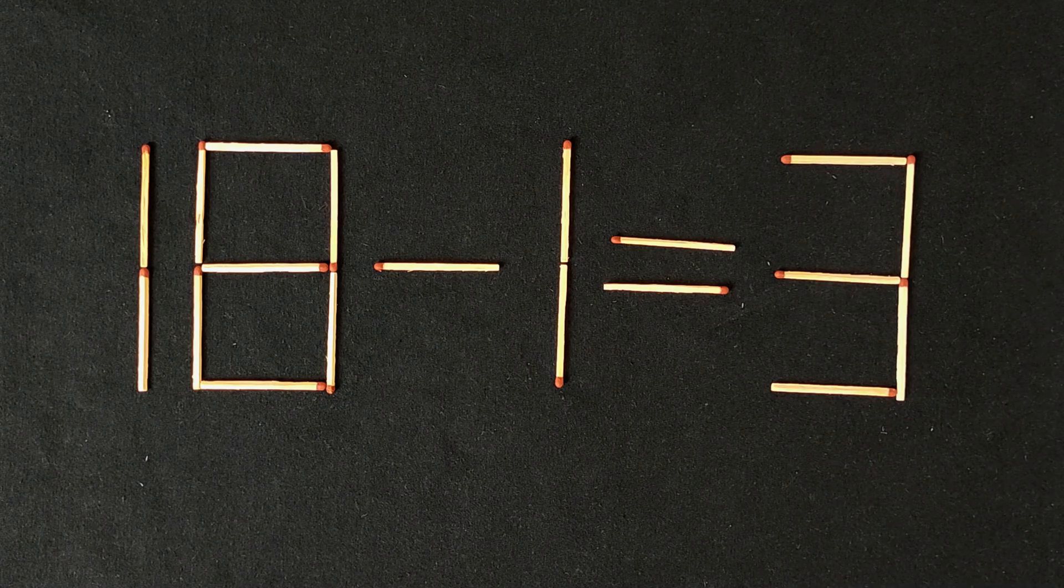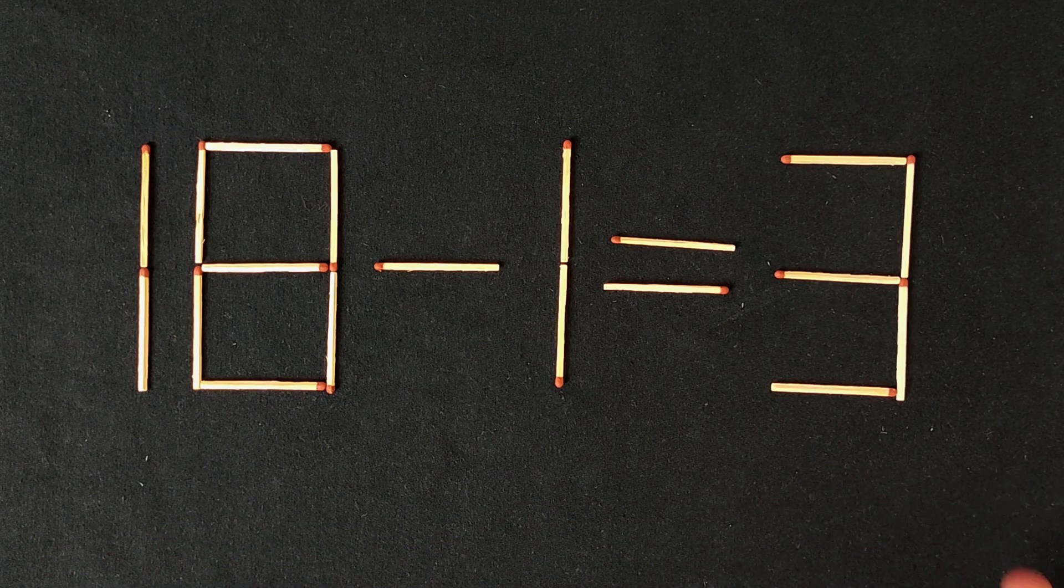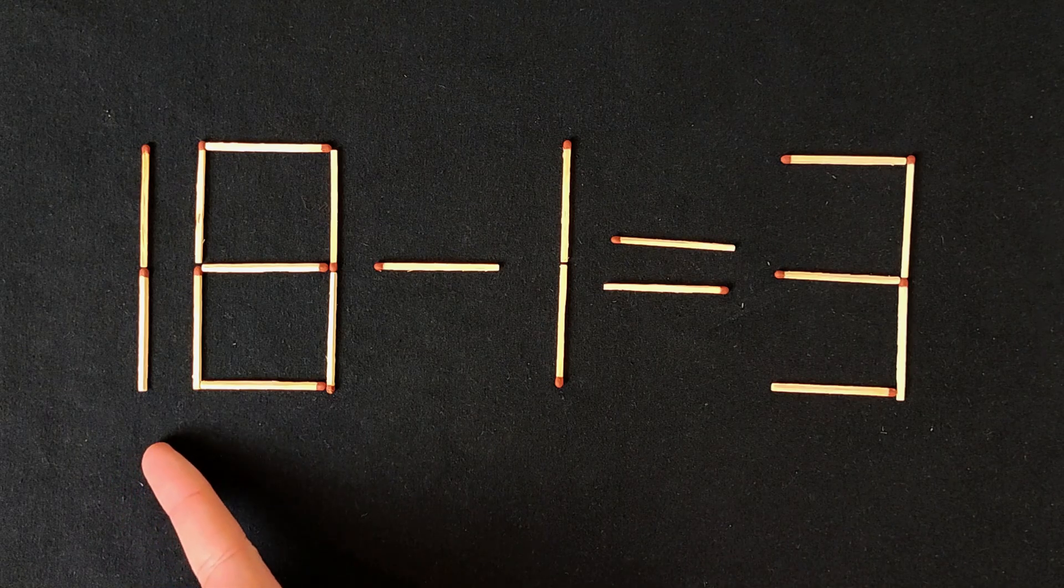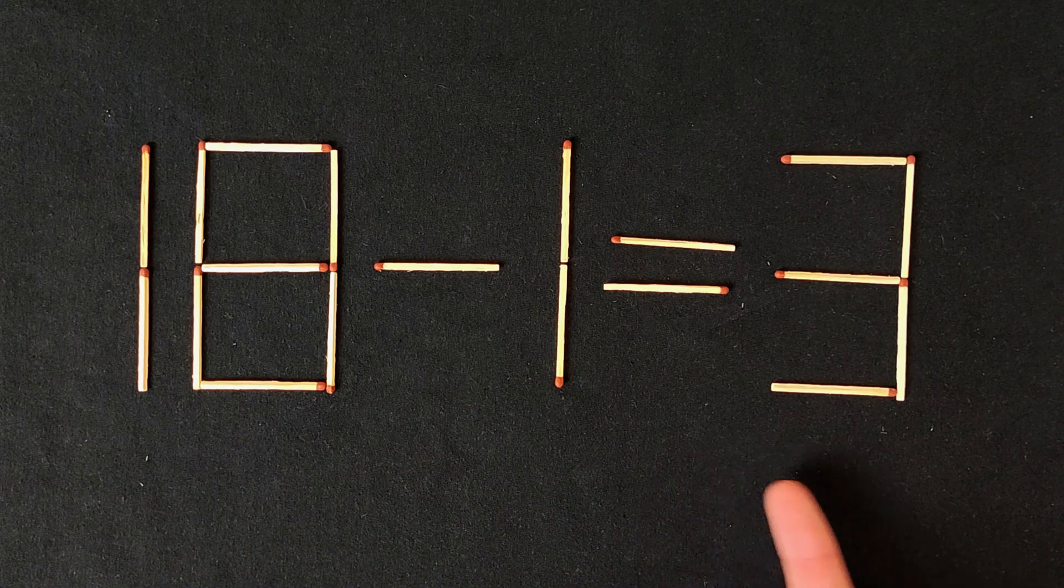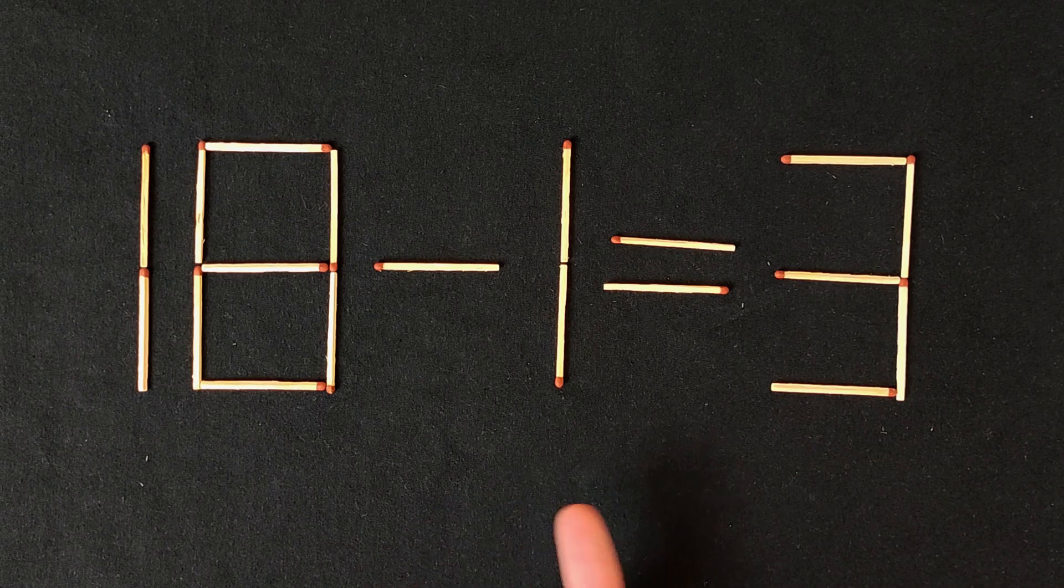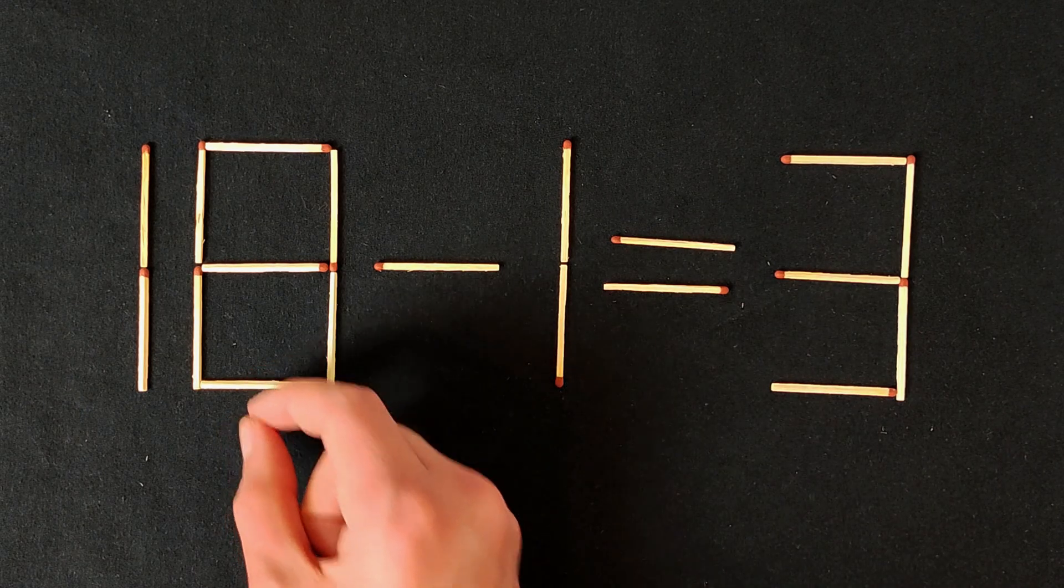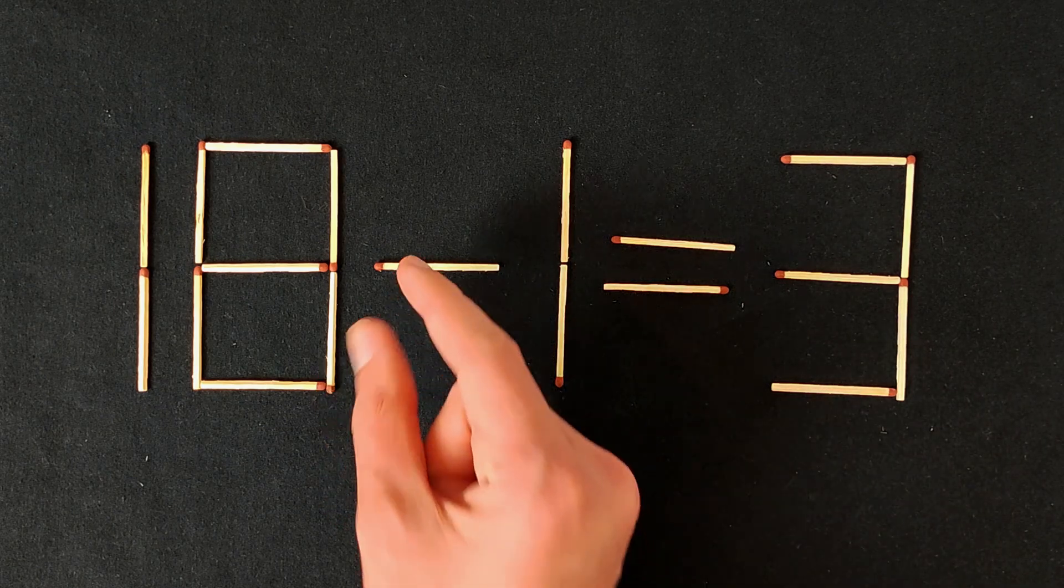Hi everyone! Today we have a puzzle like this. Yes, 18 minus 1 equals 3. That's wrong, as you can see. We need to rearrange one match so that this equation is correct.